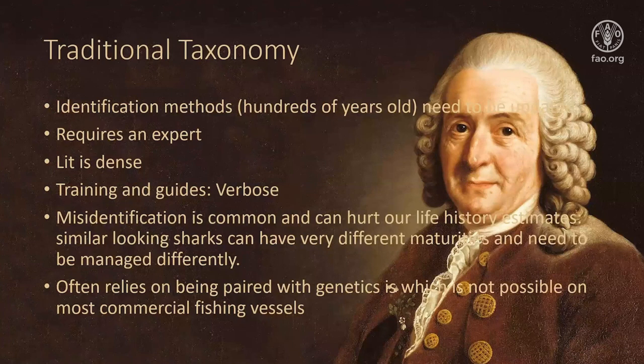However, the way that we identify sharks is mostly based on traditional taxonomy — the same thing that Linnaeus was using — and this requires an expert in the field. There is some literature on how these sharks look, but it's very dense. The training guides are often verbose and hard for people to use in the field, especially at sea. Because of this, there's a lot of misidentification, which can be very harmful to life history estimates: if you have different species all mixed up with different estimates of age and offspring, this can really mess up our understanding and make policymakers make incorrect decisions to protect these species.